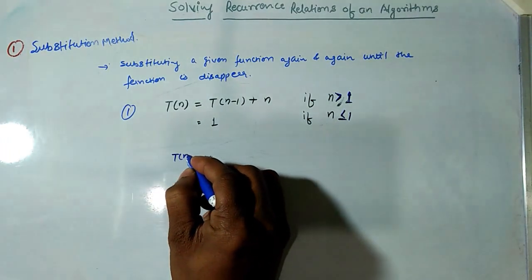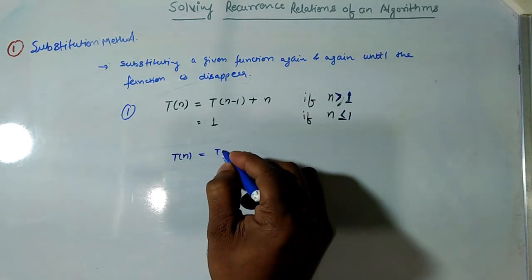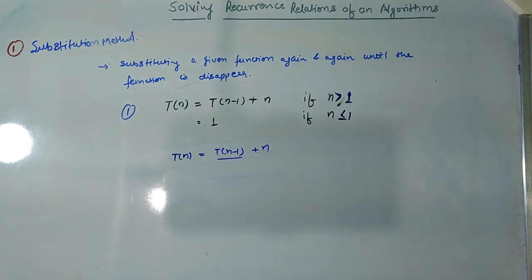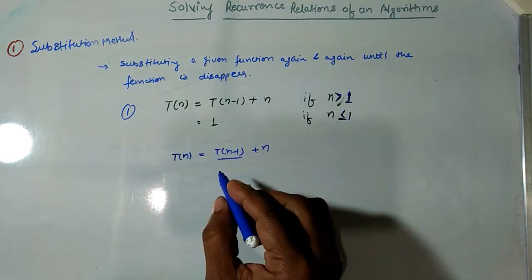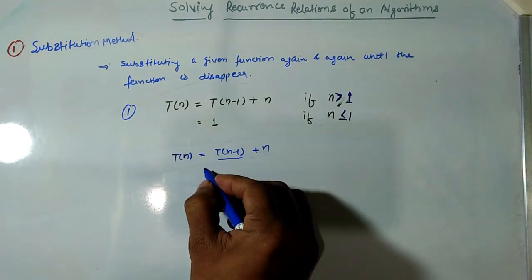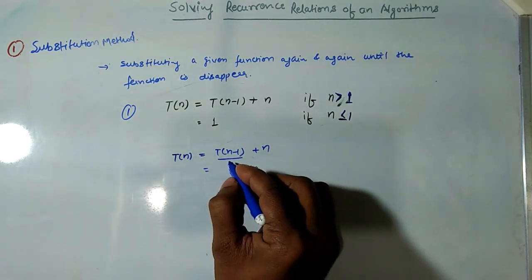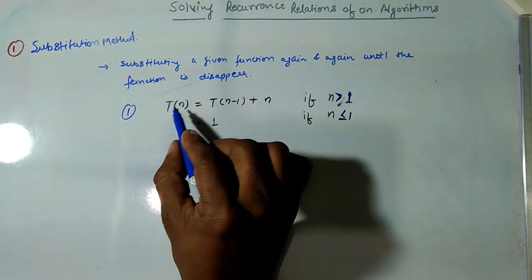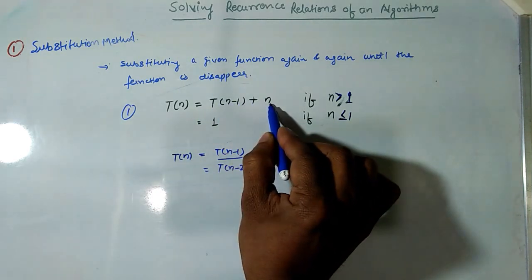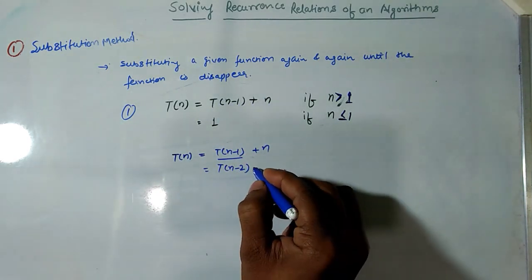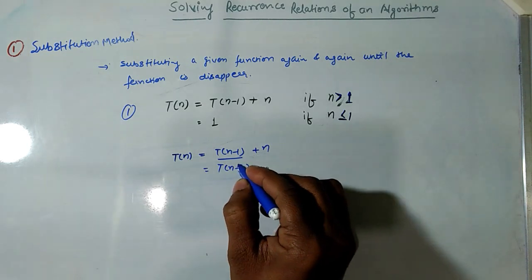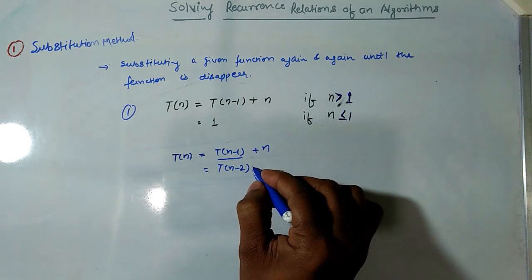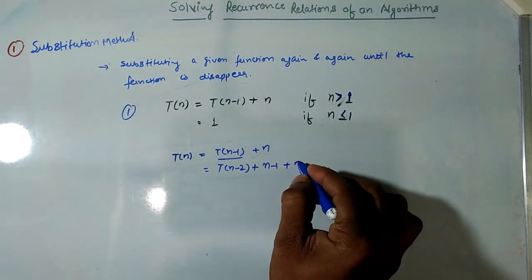To find the time complexity of T(n) = T(n-1) + n, we substitute the value of T(n-1) from the same relation. So T(n-1) becomes T(n-2) + (n-1), giving us T(n) = T(n-2) + (n-1) + n.